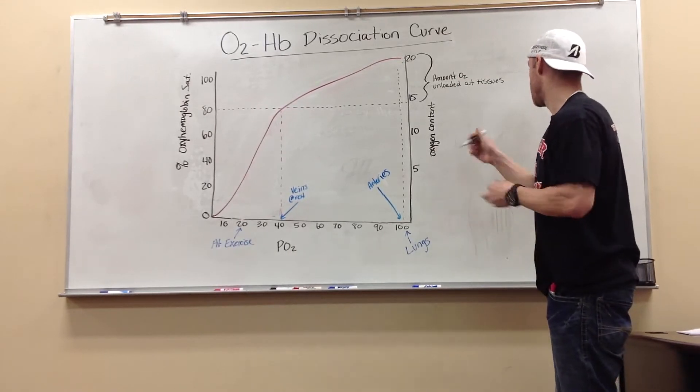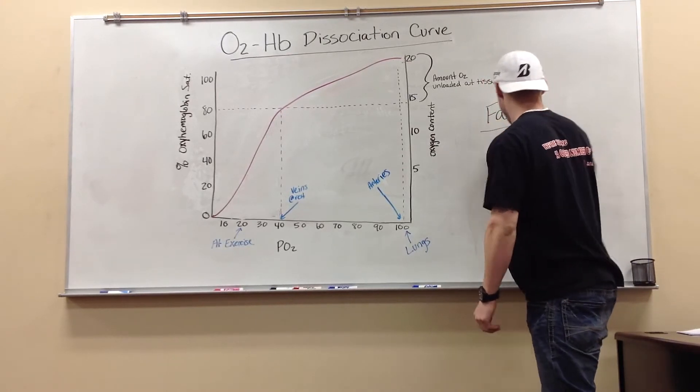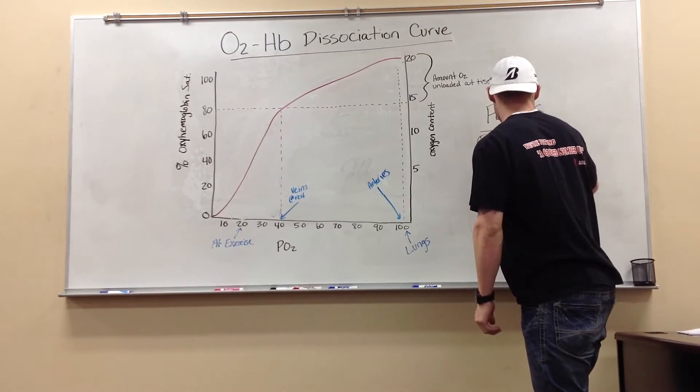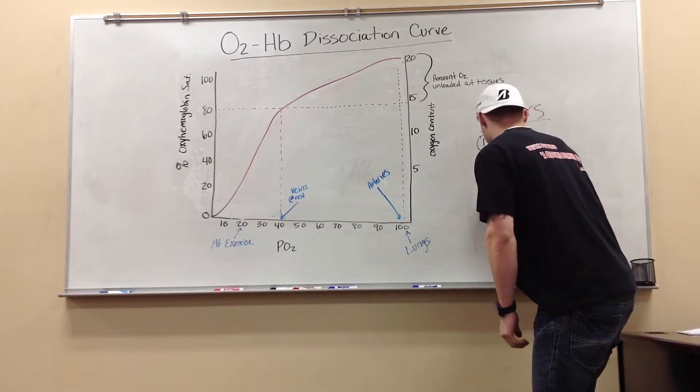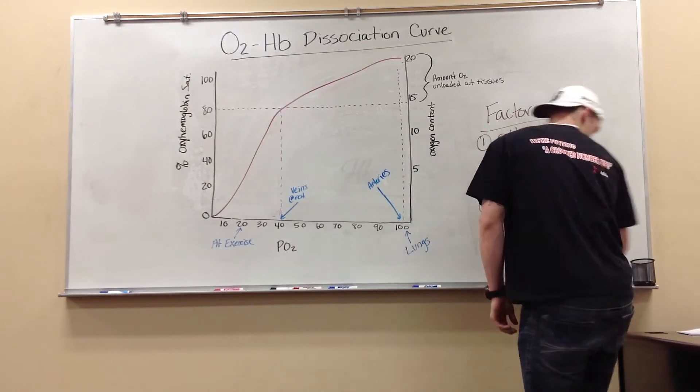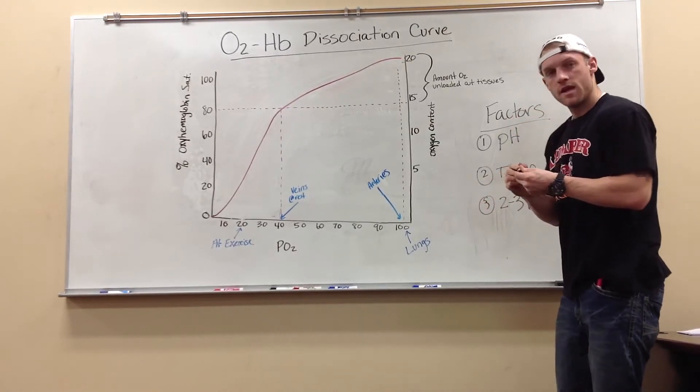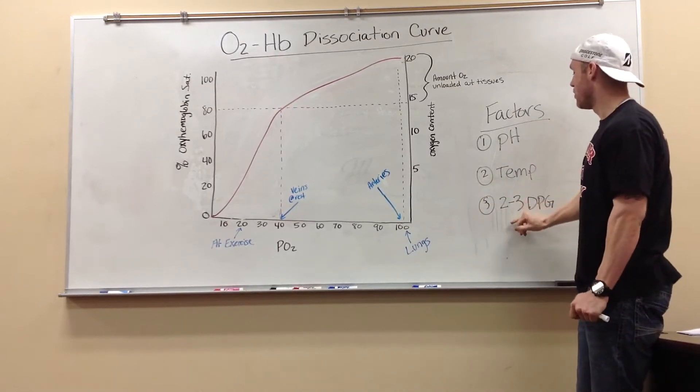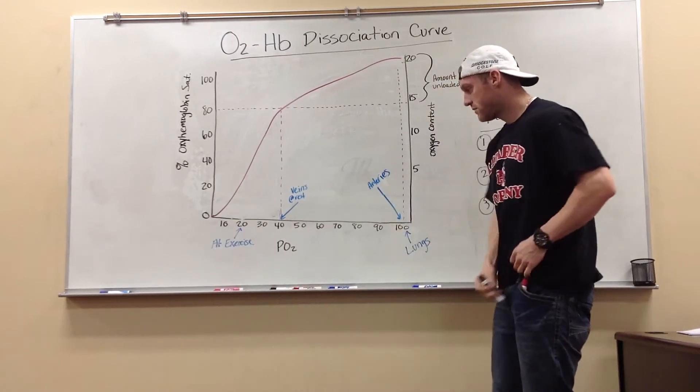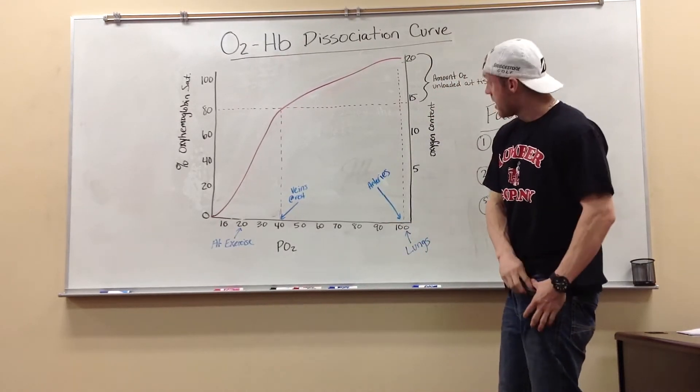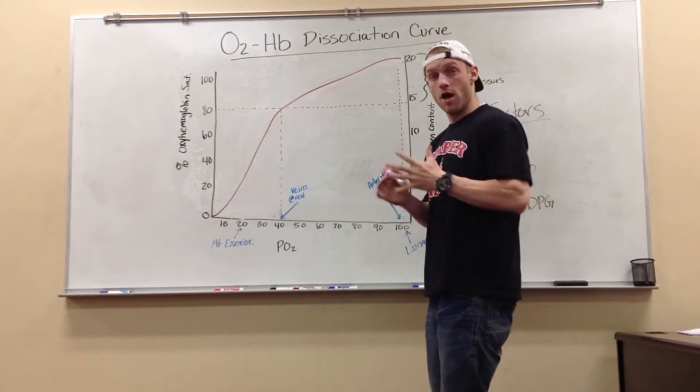Now, here we have the dissociation curve, and I'm going to put my factors back on the board. These are our three factors that can alter our oxygen and hemoglobin relationship. So, on to the graph. I'm just going to explain the graph first, and then I'm going to bring each one of these factors in separately so you can get the understanding of the concept.